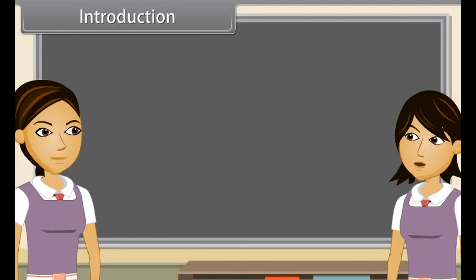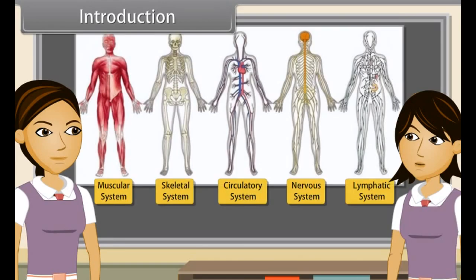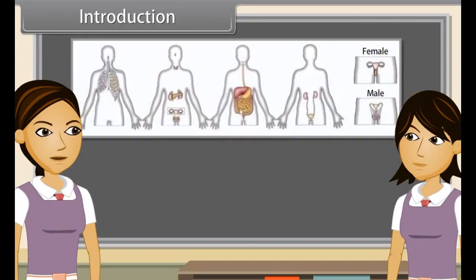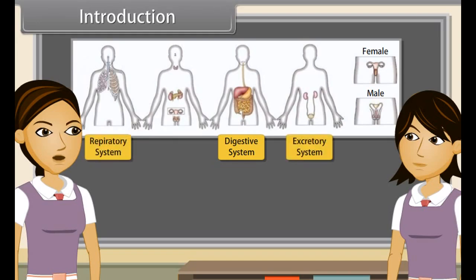As we already know, the body of higher animals like man is formed of a number of organ systems. Some examples are the digestive system, respiratory system, circulatory system, excretory system, etc.